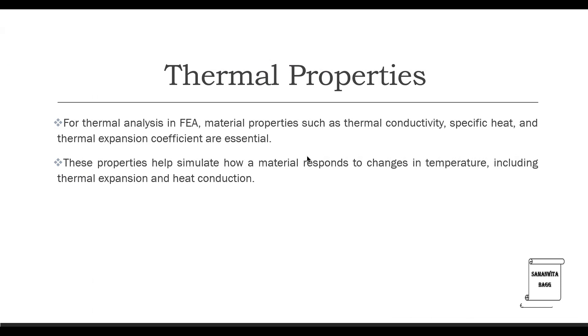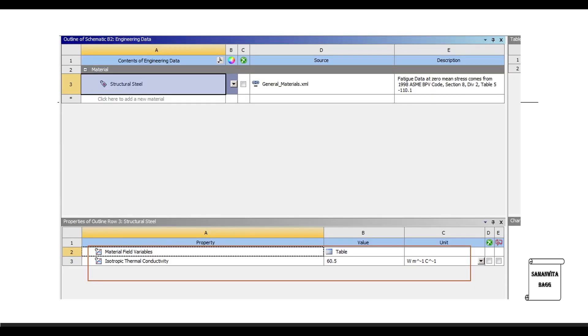The next important property are the thermal properties. For thermal analysis in FEA, material properties such as thermal conductivity, specific heat, and thermal expansion coefficient are essential. These properties help simulate how a material responds to changes in temperature, including thermal expansion and heat conduction. So here you can see this is a screenshot of a thermal analysis. For structural steel, the material property required is isotropic thermal conductivity, which is 60.5 Watt per meter degree Celsius. You can also have orthotropic thermal conductivity. I have used isotropic material properties such that the property of the material remains same along all the axes.